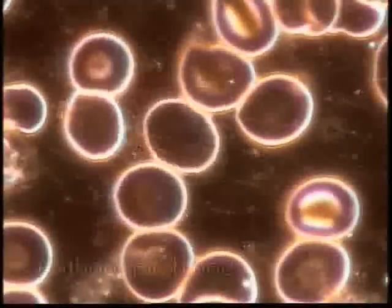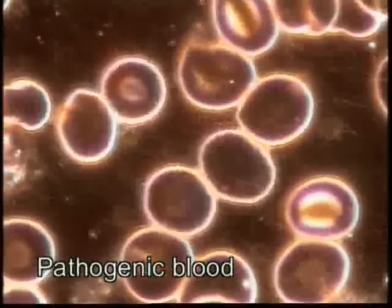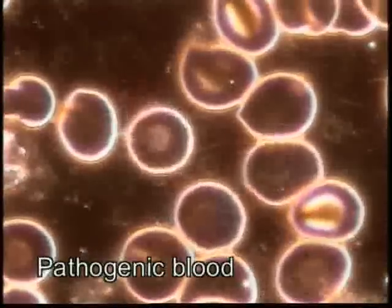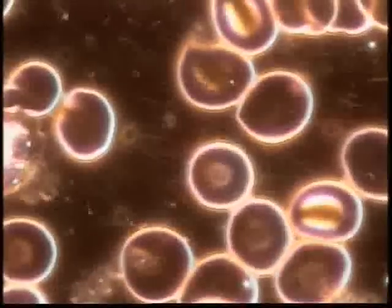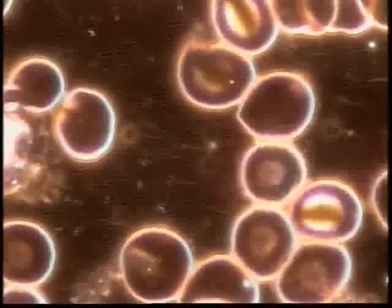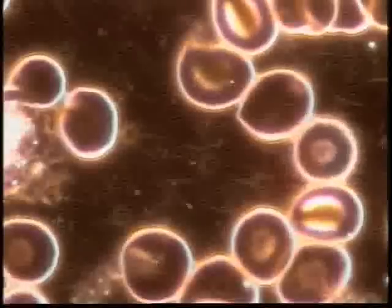A patient's blood immediately after withdrawal. When it is placed under the dark field microscope, no irregularities can be observed. The red and white blood corpuscles, which can be seen here as large, bright circles, are moving normally.